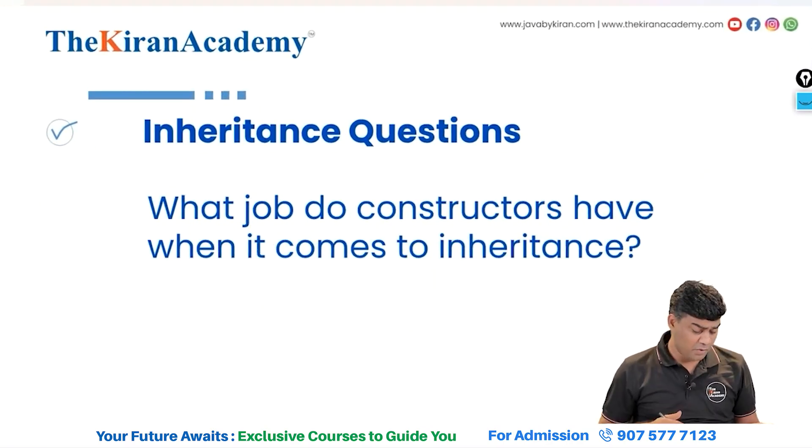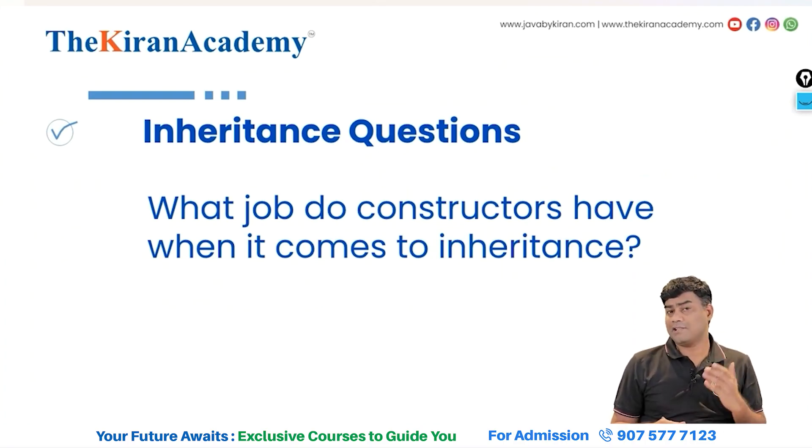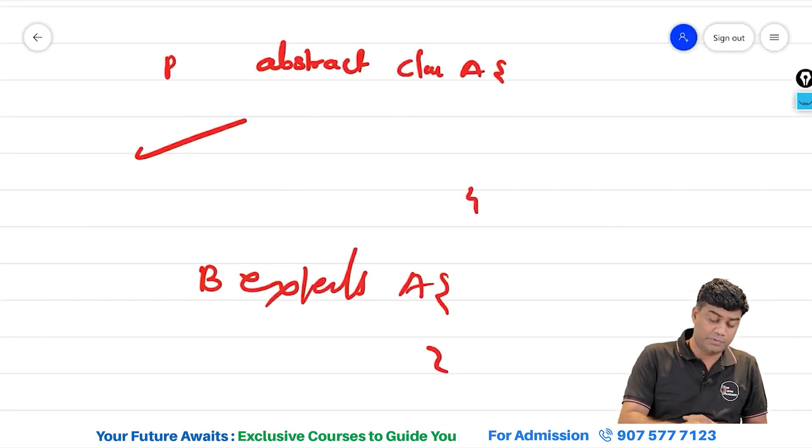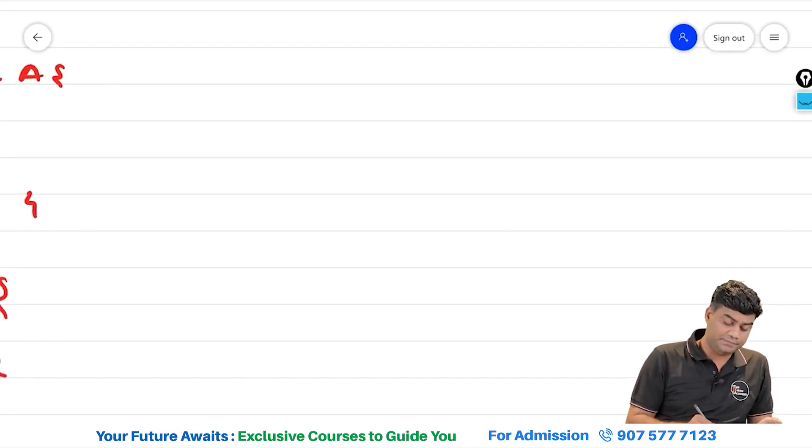This will be last question. What job do constructors have when it comes to inheritance? Yes, every class has constructor and every constructor has its first line as super. If you look at this example, I want to explain you this thing, these are very important things.